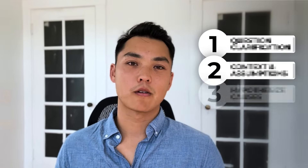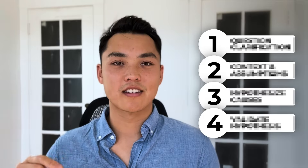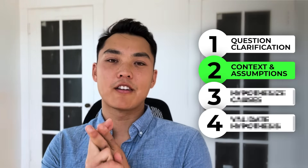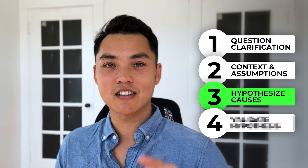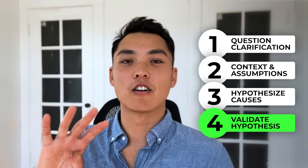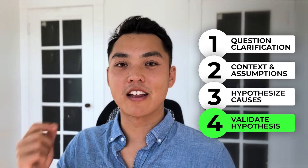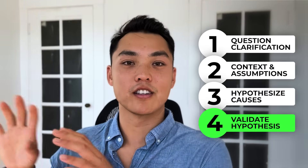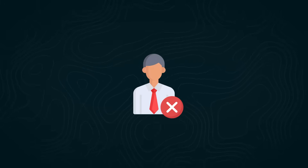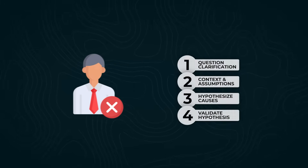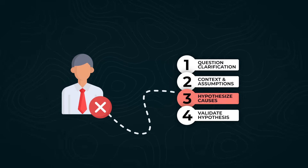At Interview Query, we use a four-step framework for how we answer these types of data science questions. First, we want to clarify the question. Second, we want to gather context and make assumptions. Third, we want to hypothesize on possible causes. And fourth, we want to validate our hypothesis with different scenarios. The biggest mistake I see most data scientists make is they skip right to step three — diving into the solution without clarifying first. That's wrong.